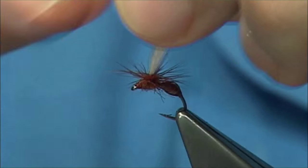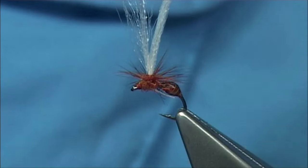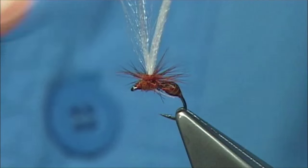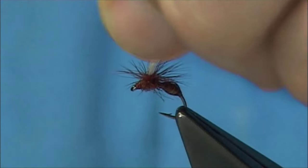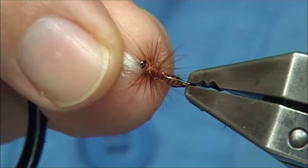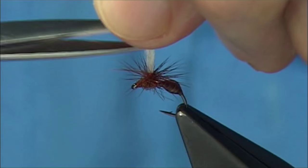Now what you can do is put a tiny bit of varnish just in at the root here, and that'll help protect the hackle and stop it unraveling. I've not had any issues with it, so it should be okay.